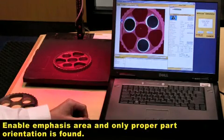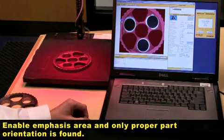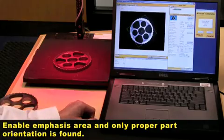I'm going to emphasize that area shown here in blue, then do a snap and find. There it finds a part in only one orientation.